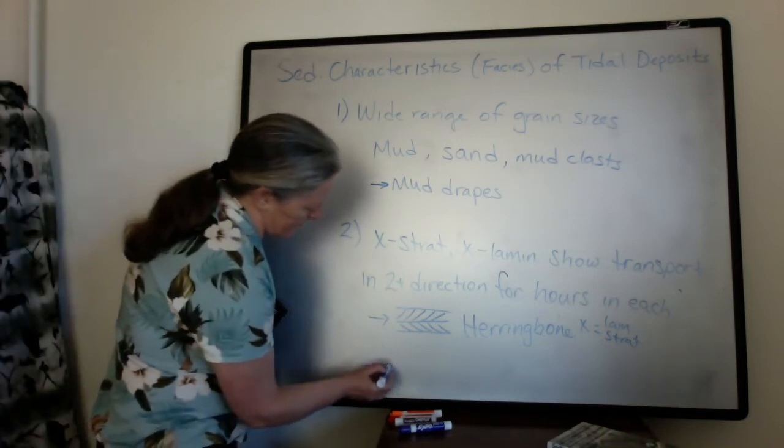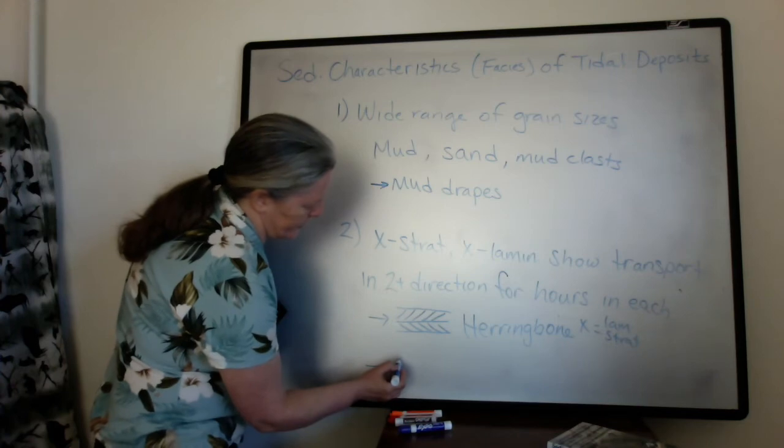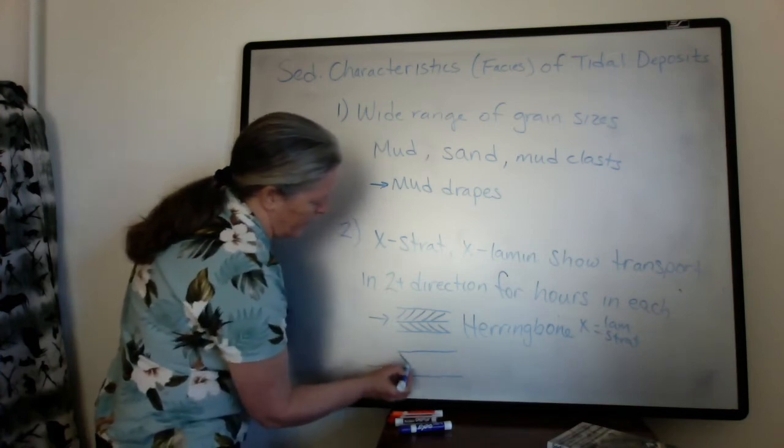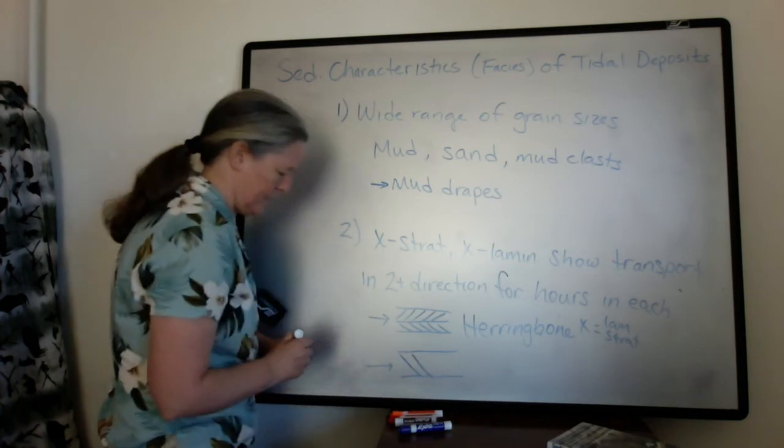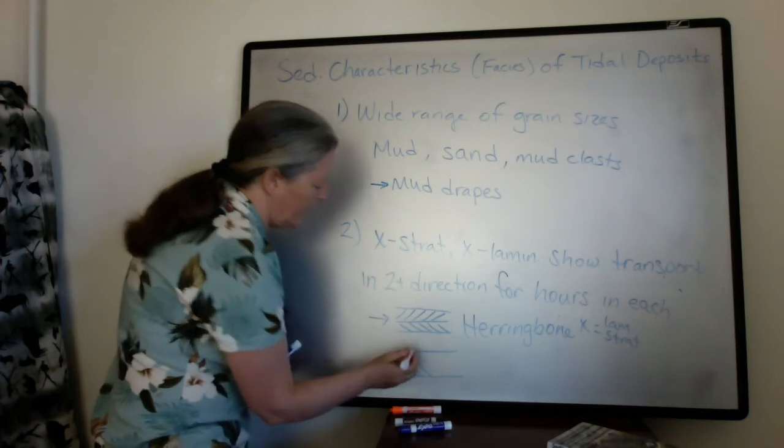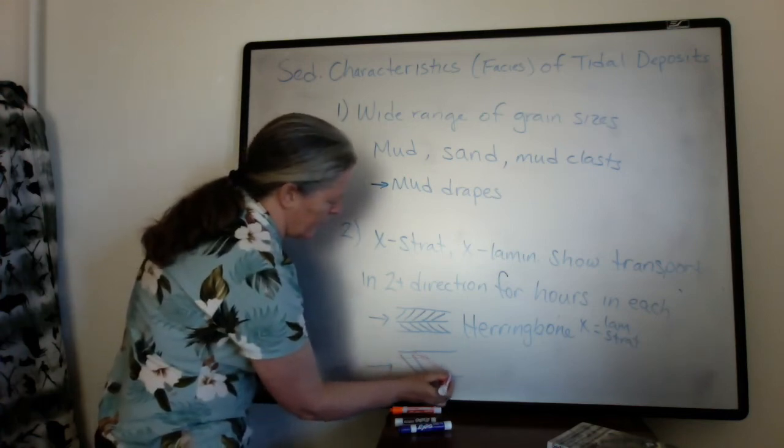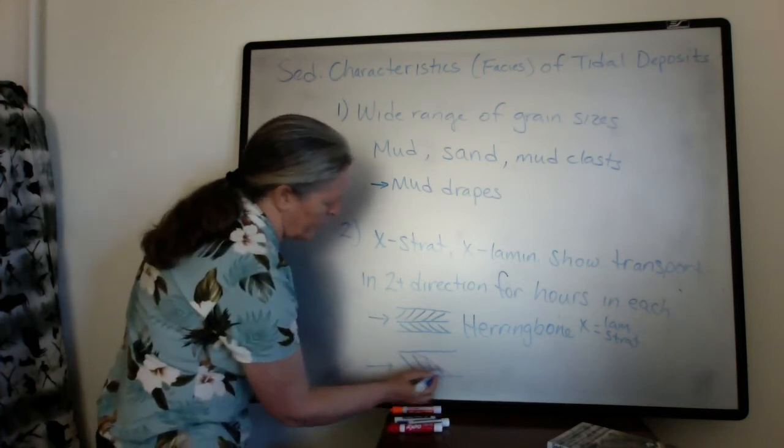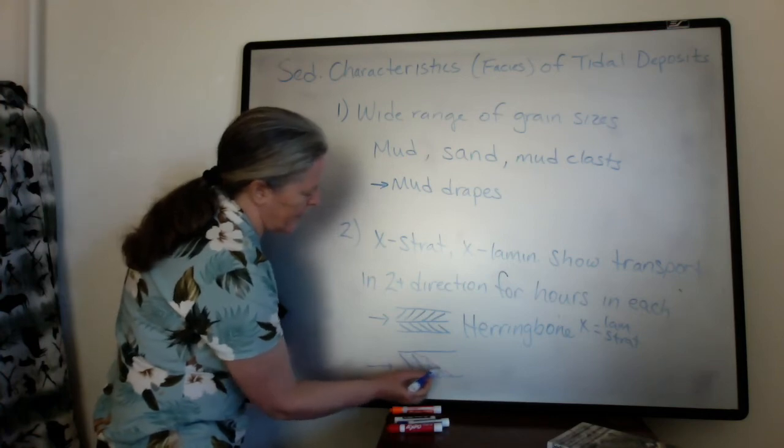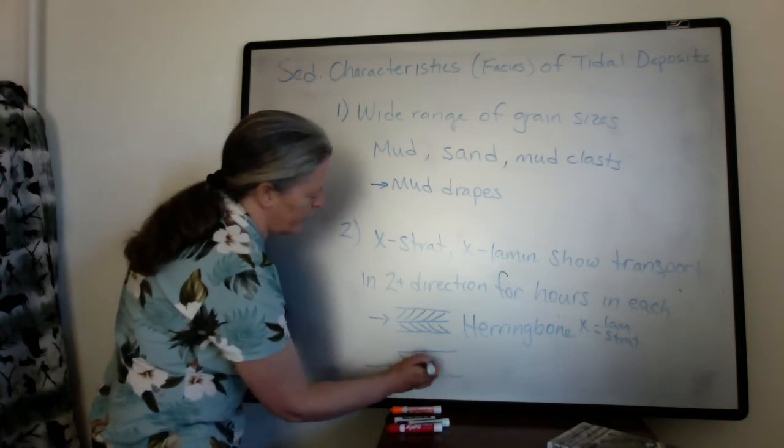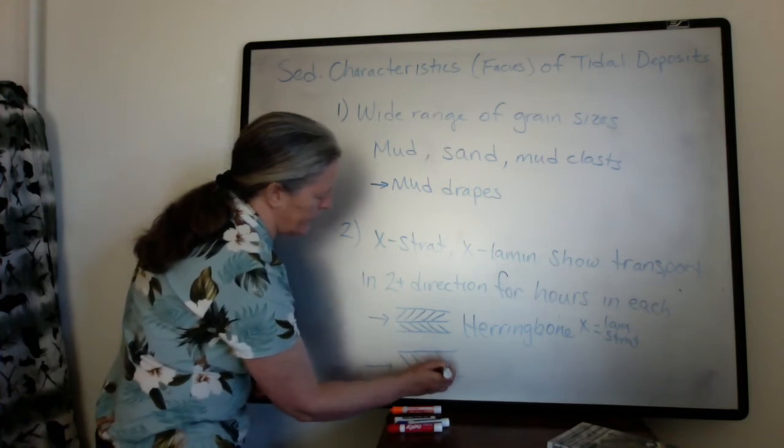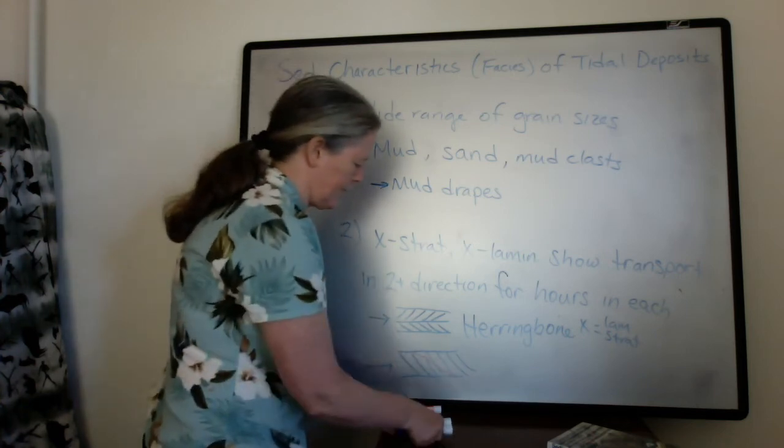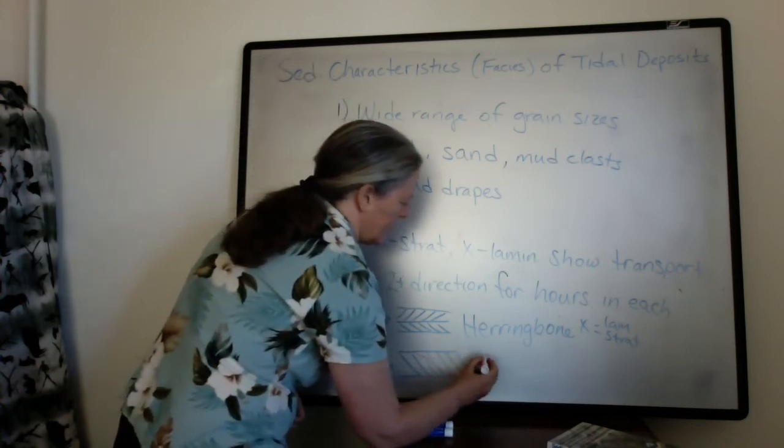And then the second one was reactivation surfaces. So I'm going to draw that a little bigger here. And that would be where you have that erosion surface within the cross stratification. So this bed form is migrating to the right. There was a change in the flow direction that eroded part of it. And then it continues migrating to the right in here. So that red line is the reactivation surface.